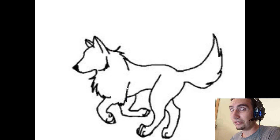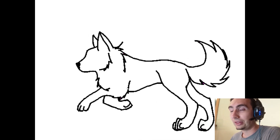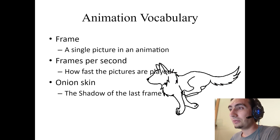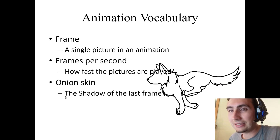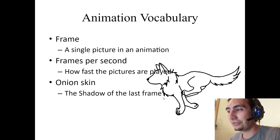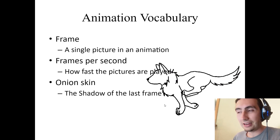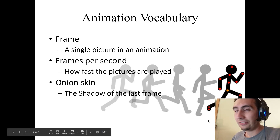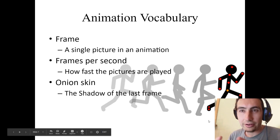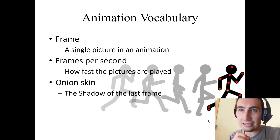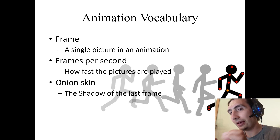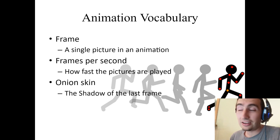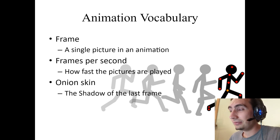If I go faster, he really looks like he's starting to move — that's a really fast frames per second, like 40. There's one more term: onion skin. That means the shadow of the last frame. It's a ghost image of what you did last, and it helps you make a slight movement from that to make your next frame — it just helps you make a smooth animation.